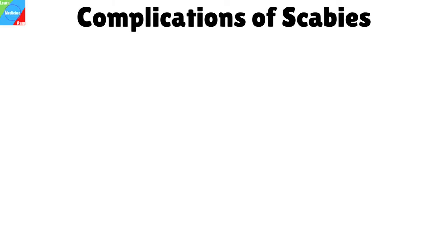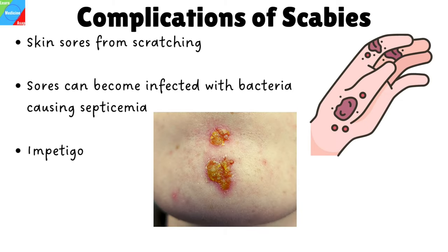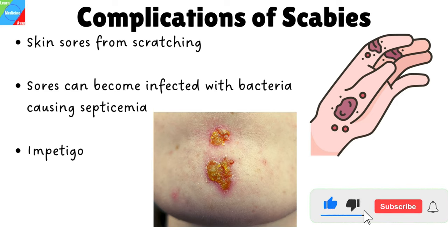What are the possible complications from having scabies? Scratching too much can break your skin causing sores. These sores can become infected with bacteria, causing septicemia — a bacterial infection of your bloodstream that is often serious. It can also cause impetigo, which is an infection on the skin's surface caused most often by staph bacteria. Scabies is treatable, but can be hard to get rid of completely. You may itch for a long period before the scabies are completely gone. Be aware that scabies is spread by contact, and take precautions to avoid infecting others.